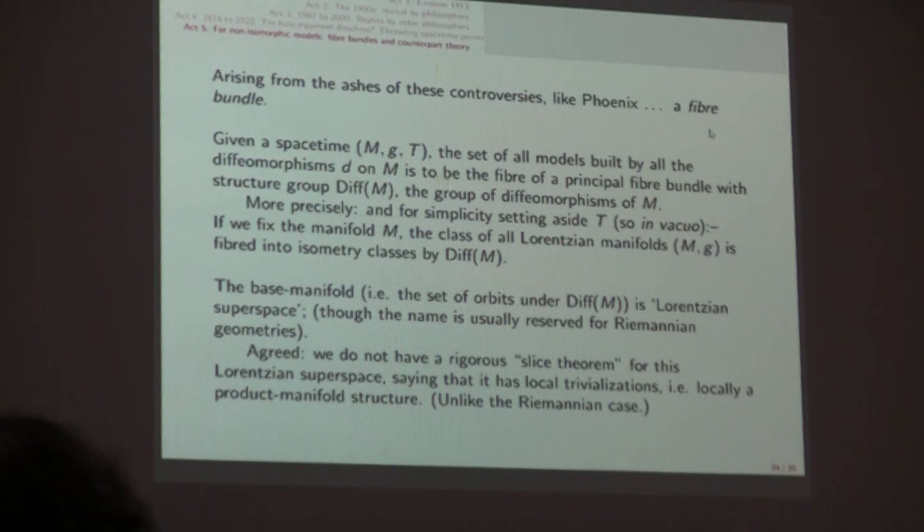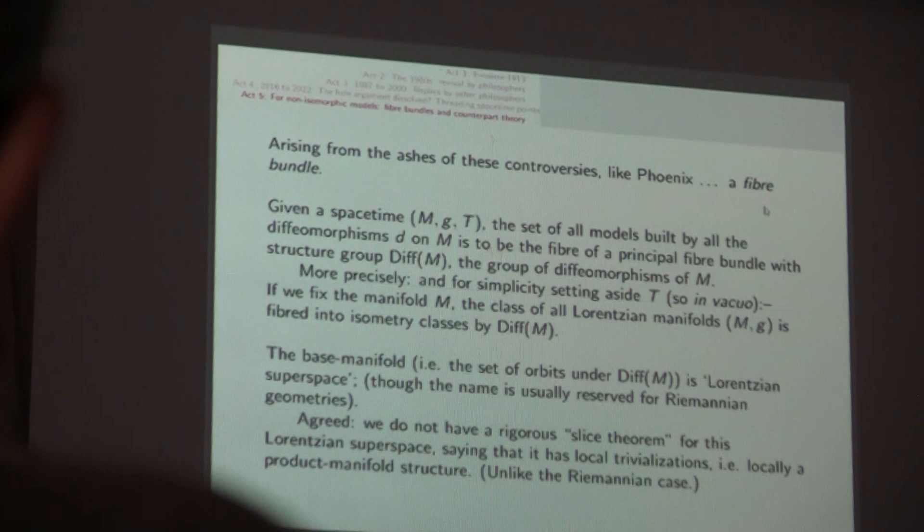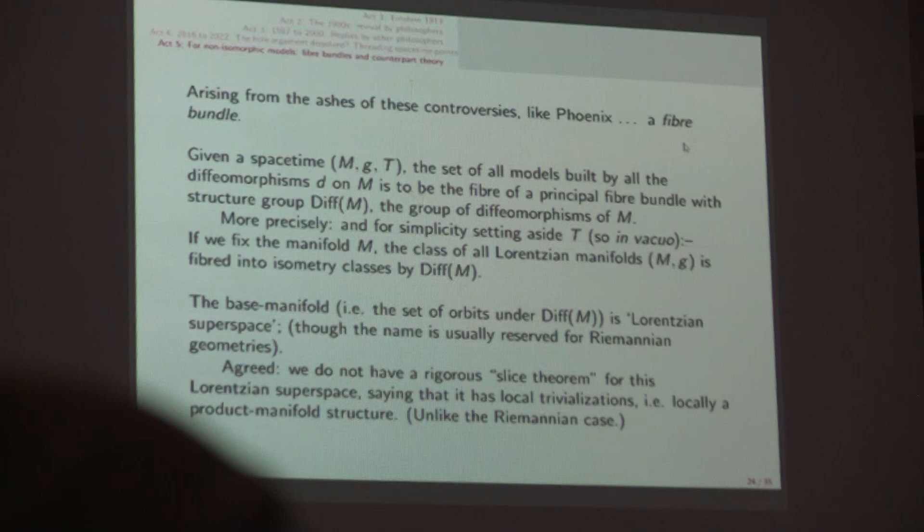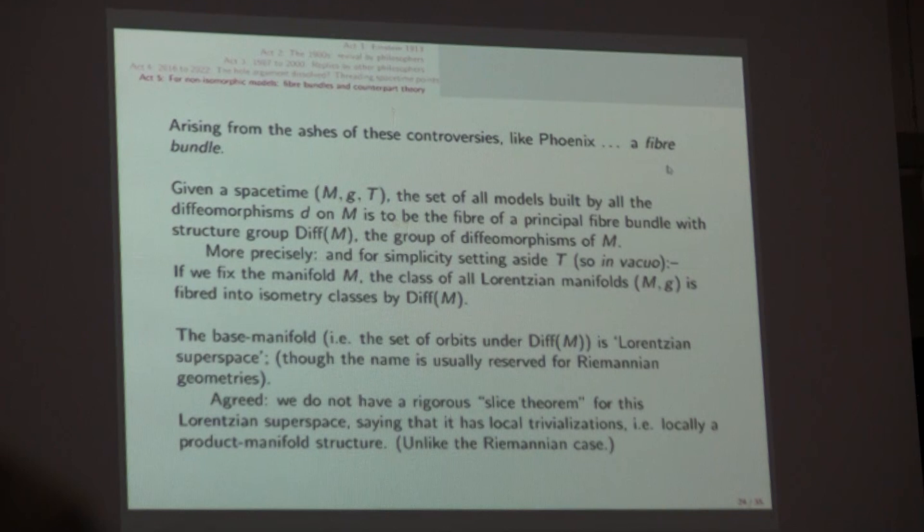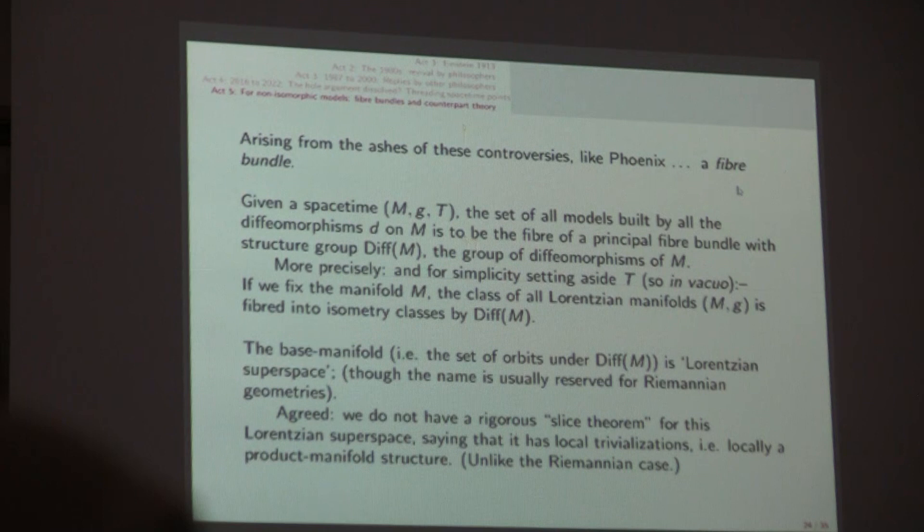So this congruence of curves cuts the four-dimensional leaves of the five-dimensional manifold just once. And so the curve, coordinate gamma, or rather the image of the curve lying in the five-dimensional manifold, is a set of points that are threaded together. Final act, arising from the ashes of these philosophical controversies, there is, I say, like Phoenix, a beloved fiber bundle. So the idea is this, it's an infinite dimensional fiber bundle given a spacetime N, G, T. You can more or less forget everything I've said about the hole argument now because that was just a springboard to give you this fiber bundle. Nothing I'm about to say in this slide will really depend on all the junk I've told you about.